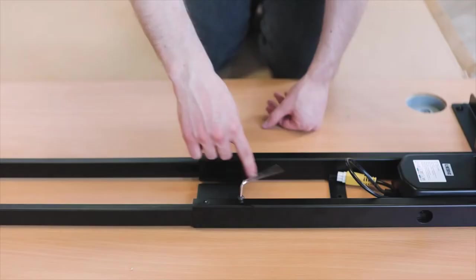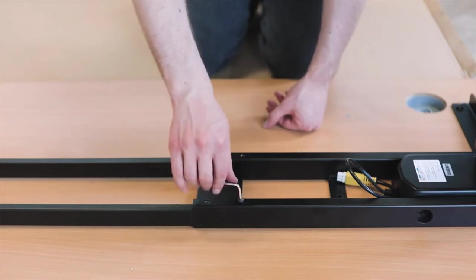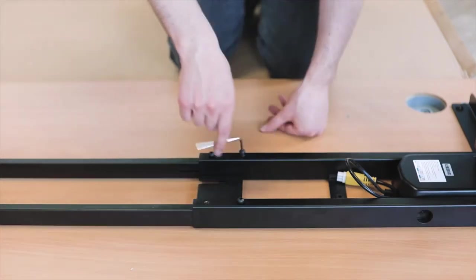Once you have attached the frame, use the short machine screws to secure it by tightening the crossbar ends to the centre rails.